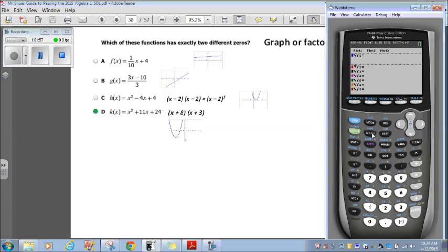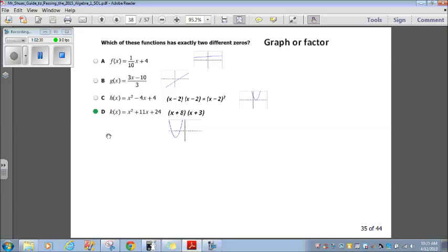So that's not it. Now, let's try choice D. x squared plus 11x plus 24. And we graph that. Oh, looky here. We have one, two different zeros. And then if we factor this, because this is a trinomial coefficient of 1, so two numbers that add up to positive 11 and multiply to 24, 8 and 3. Those are our two different zeros. Choice D is the answer.